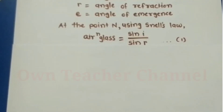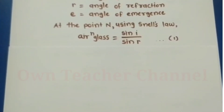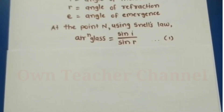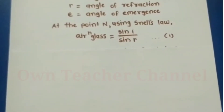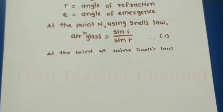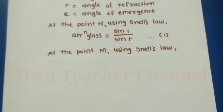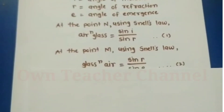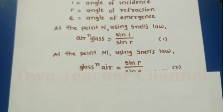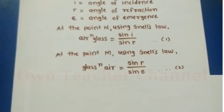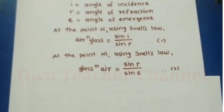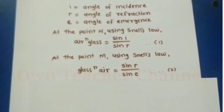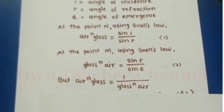At point N, using Snell's law: refractive index of glass with respect to air = sin(i) / sin(r). This is our first equation. At point M, using Snell's law: refractive index of air with respect to glass = sin(r) / sin(e). This is our second equation.